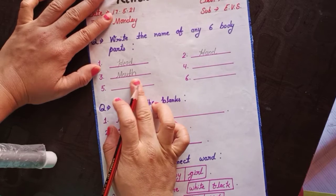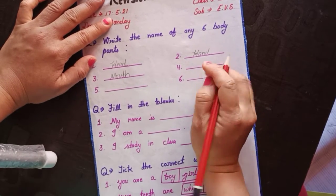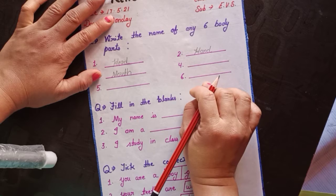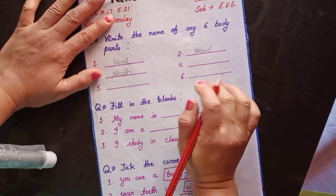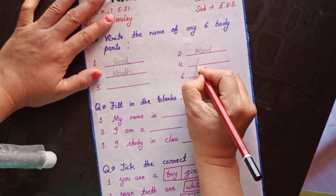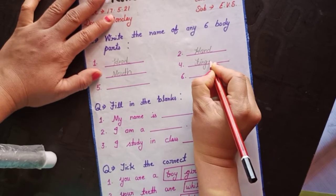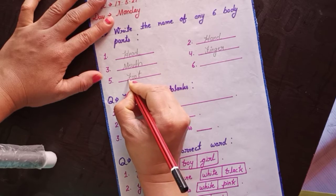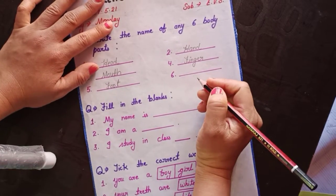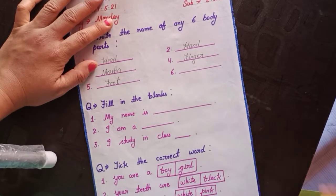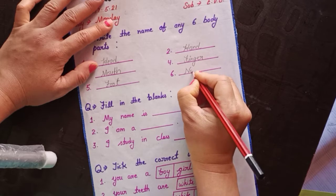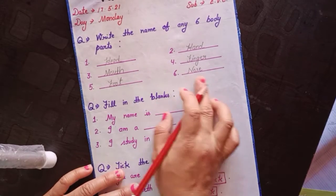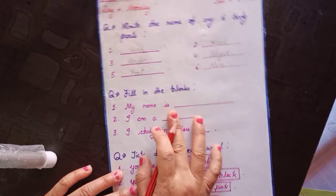Mouth — okay, M-O-U-T-H, mouth. You can write any six body parts. You have to learn them and then write. Head and mouth, next is finger, foot, and nose. Head, mouth, finger, foot, and nose — you have to write six body part names.